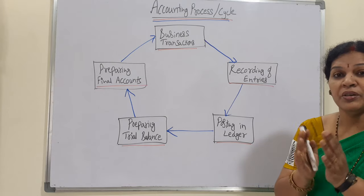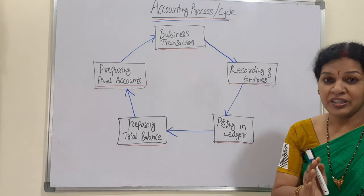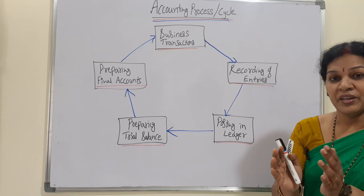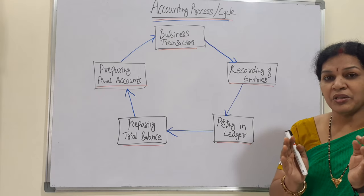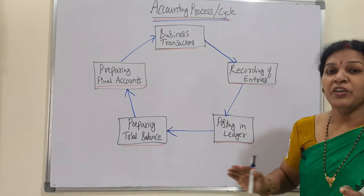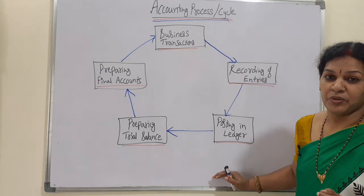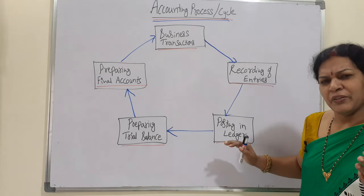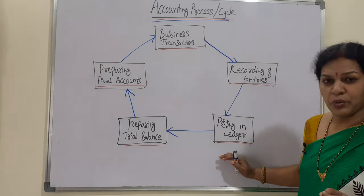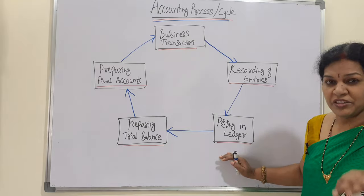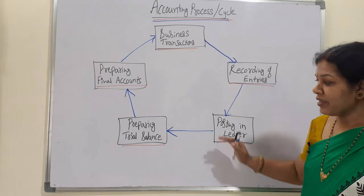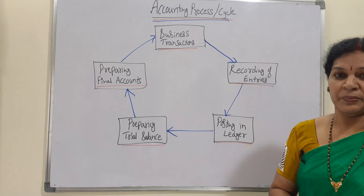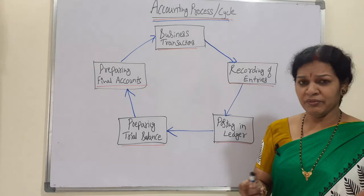After journal entries are prepared, we have to post them into ledger accounts. The ledger contains the accounts — by posting journal entries into the ledger, we come to know the balance and details of each account. Related ledger accounts are prepared at this stage.